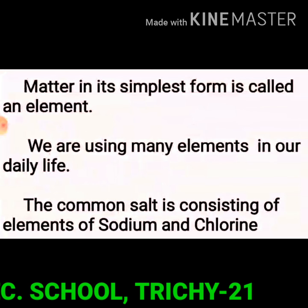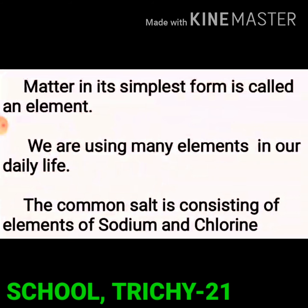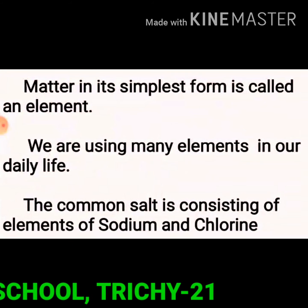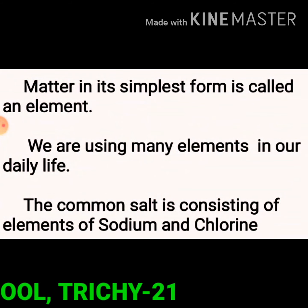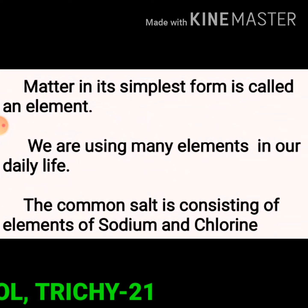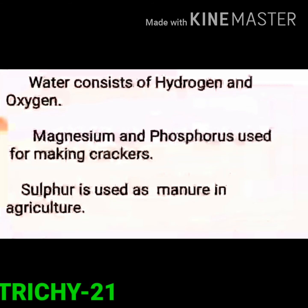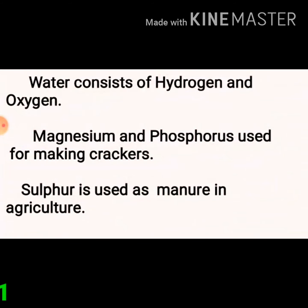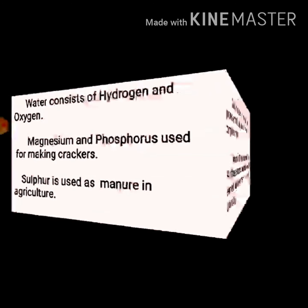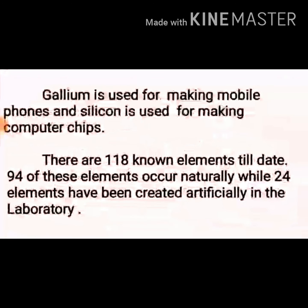Matter in its simplest form is called an element. Robert Boyle is the first scientist to use the term element. We use many elements in our daily life. Common salt consists of sodium and chlorine, water consists of hydrogen and oxygen, and magnesium and phosphorus are used for making crackers.